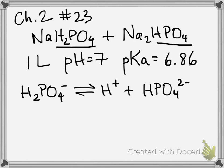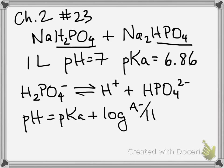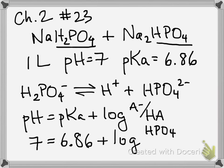So to figure out how much of each we need, let's go to Henderson-Hasselbalch. pH equals pKa plus log of A- over HA. Plug in 7 for pH, 6.86 for our pKa, and we're going to solve for the log A, the conjugate base version, is HPO4. The acid is H2PO4.